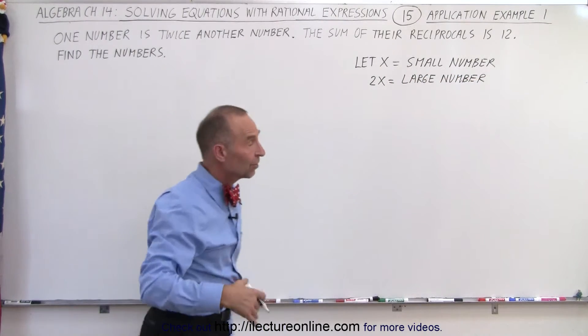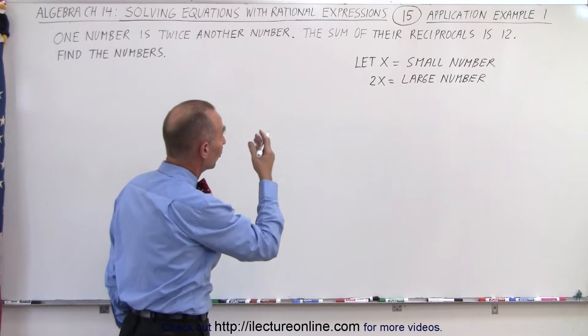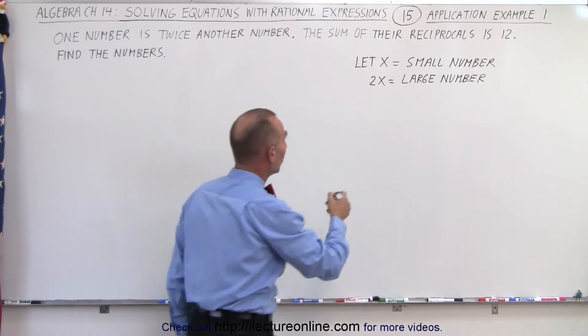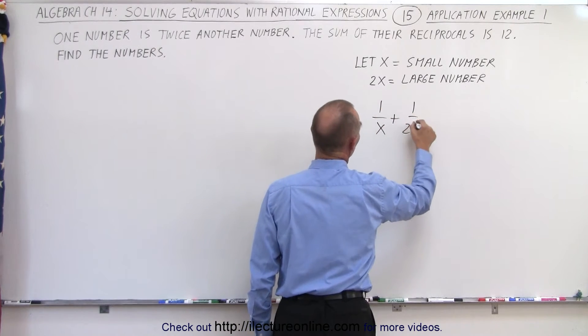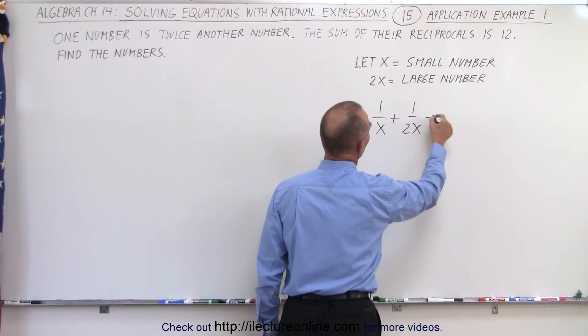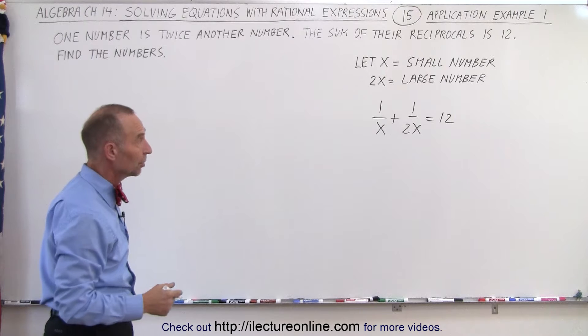Now the reciprocal is the same as the inverse. So what we can then do is if the sum of the reciprocals is 12, we can then say that 1 over x plus 1 over 2x, which is the sum of their reciprocals, must equal 12. And notice we now end up with an equation that looks quite familiar.